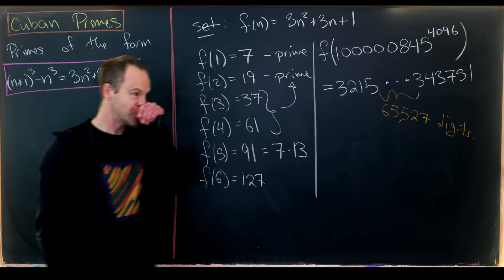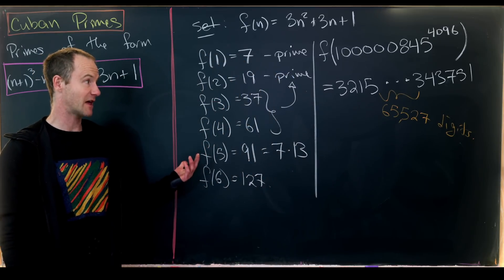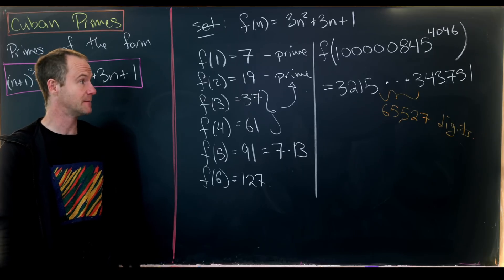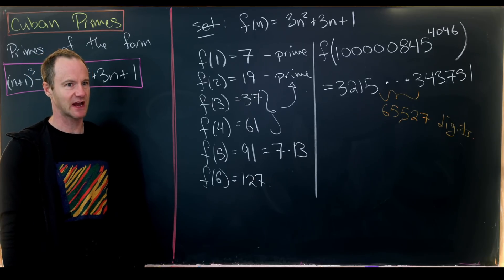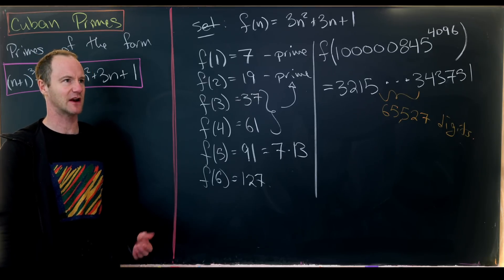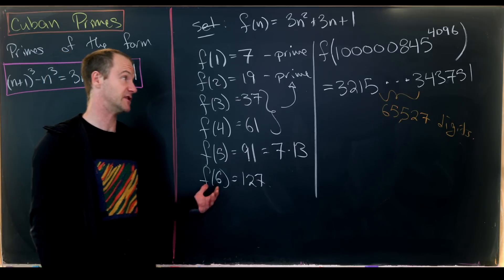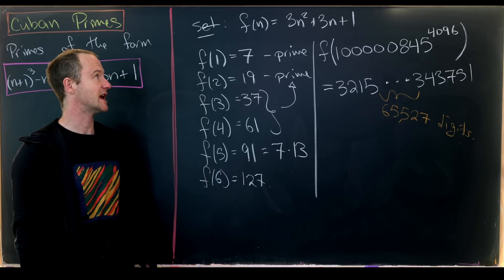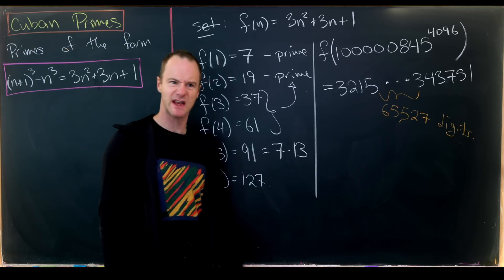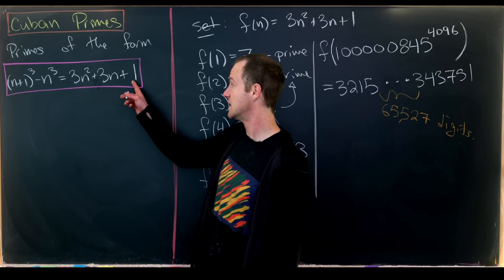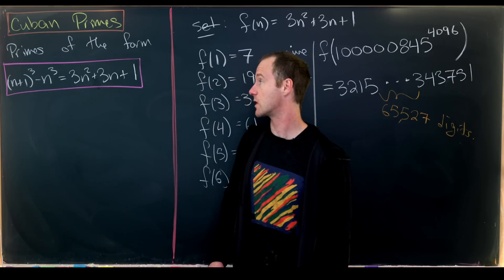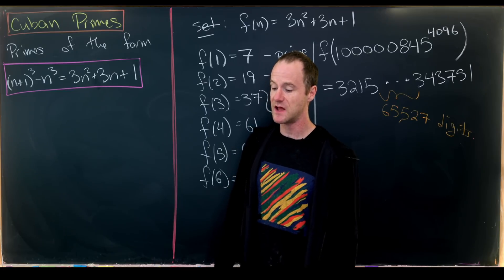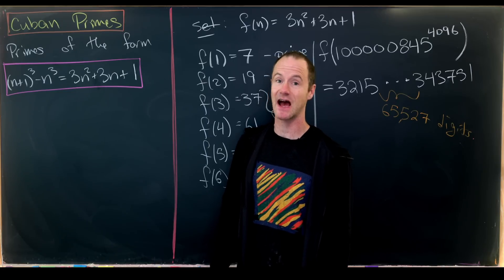What's interesting is that Mathematica can calculate this number in less than a second but has a hard time checking if it's prime. That's all we'll say about Cuban primes. Now we're moving on to something related to 3n² + 3n + 1: centered hexagonal numbers.